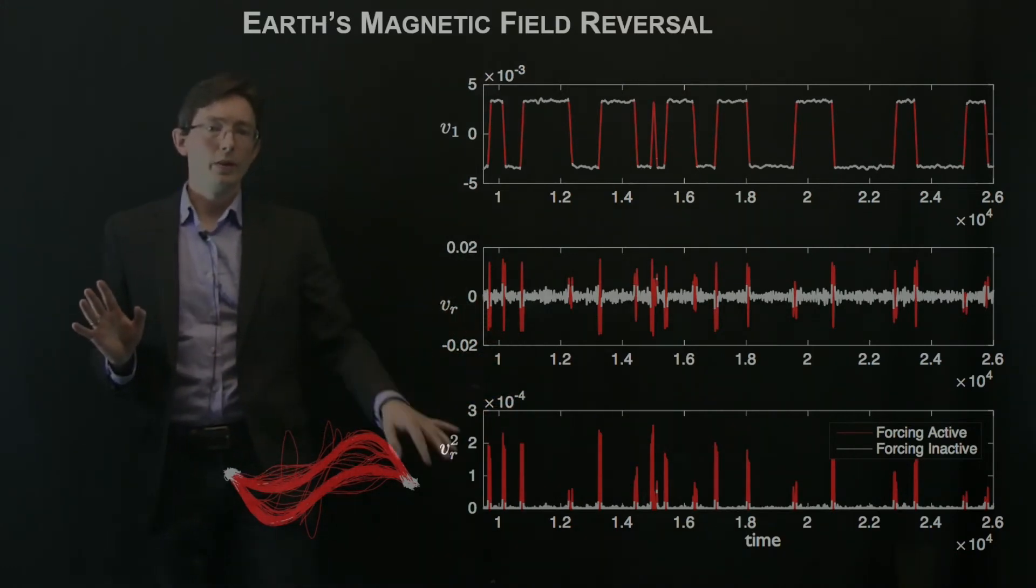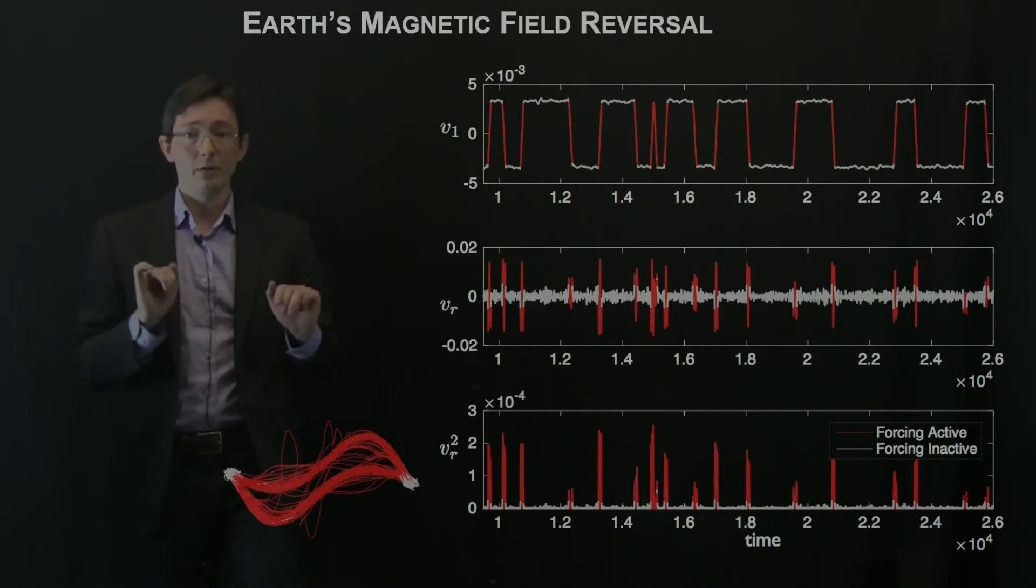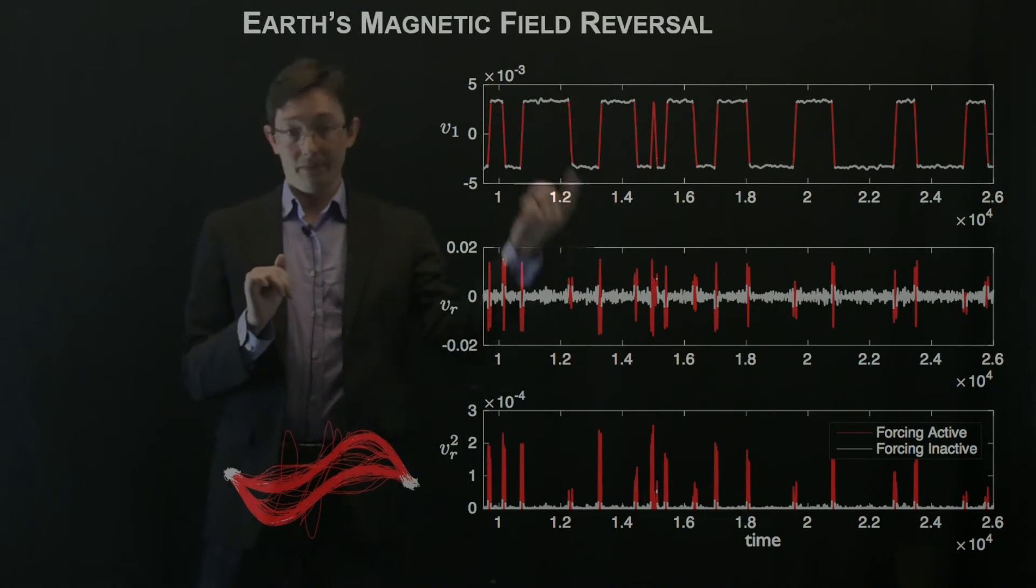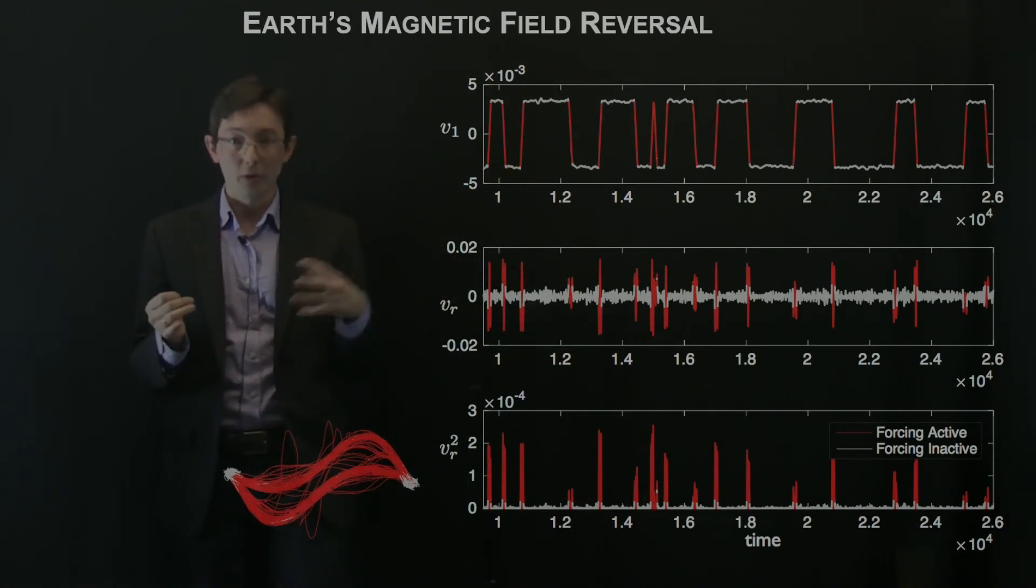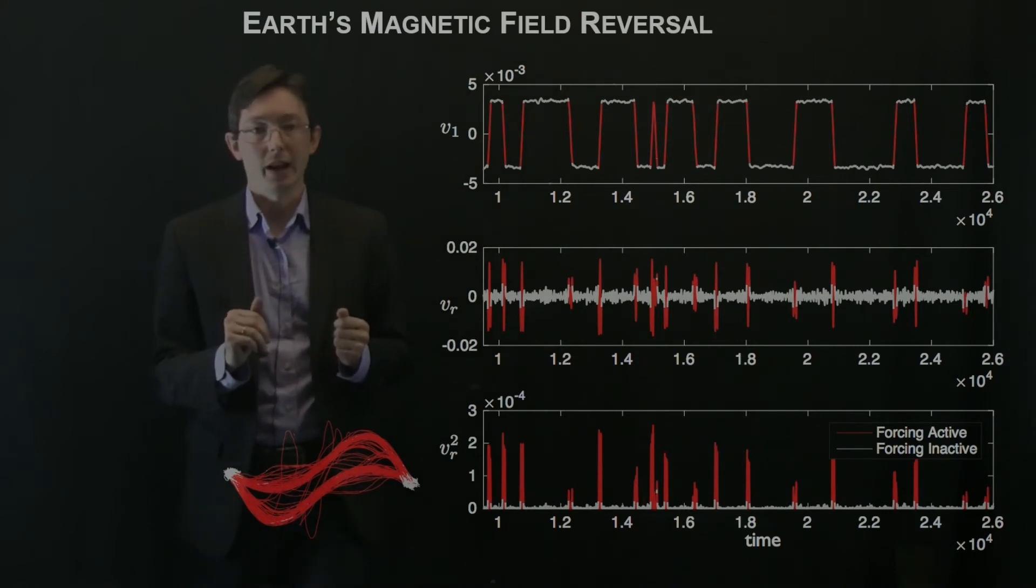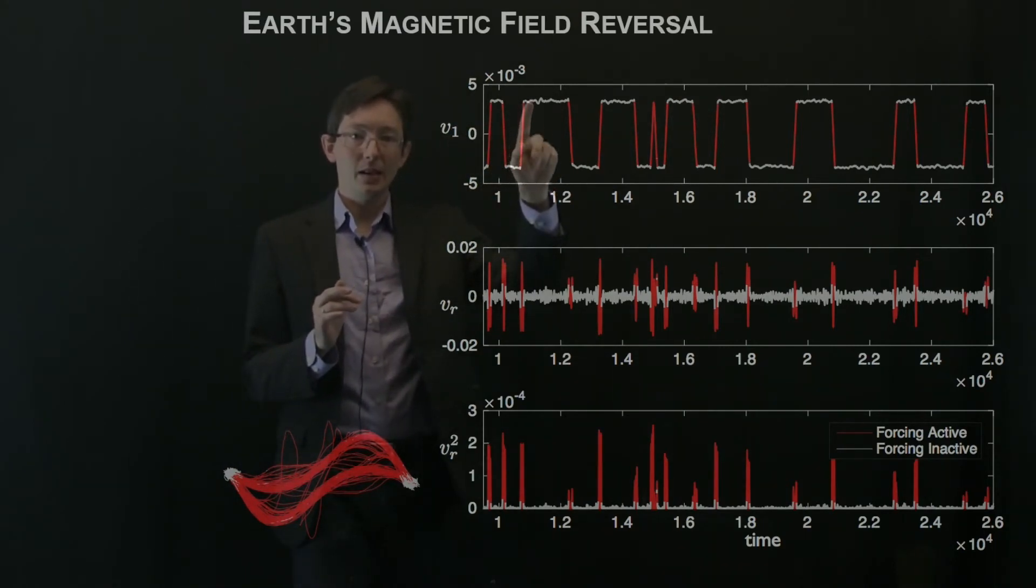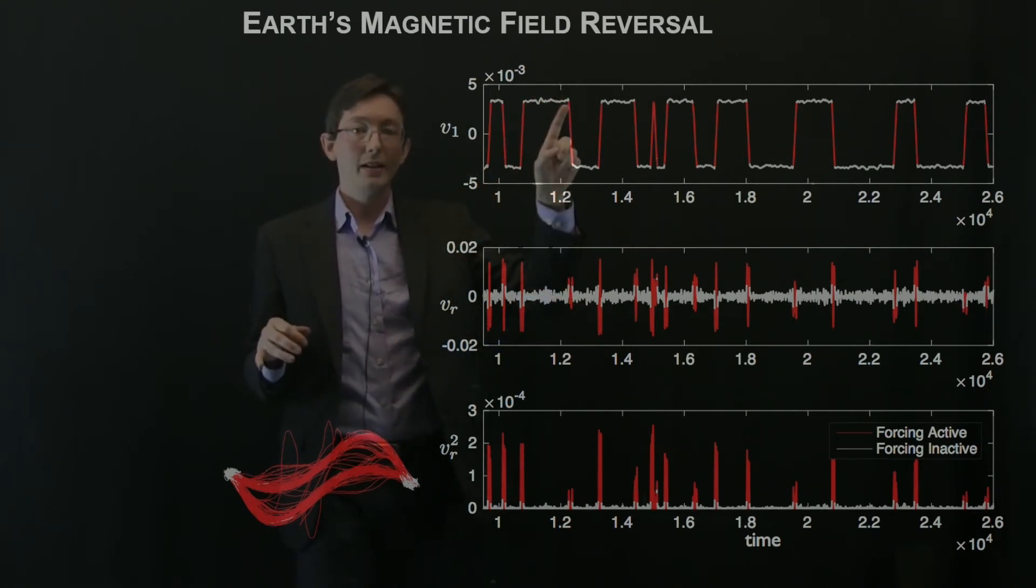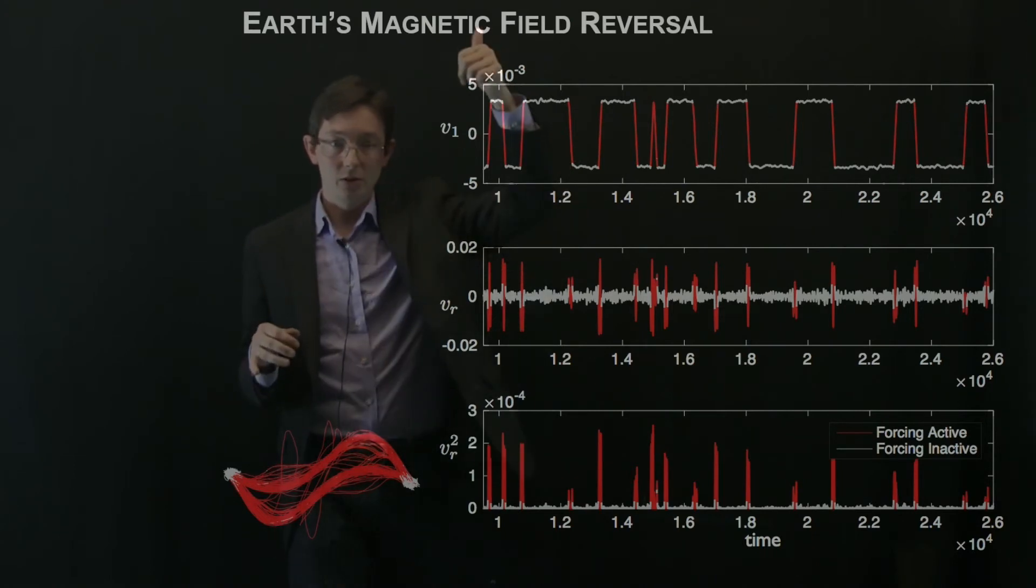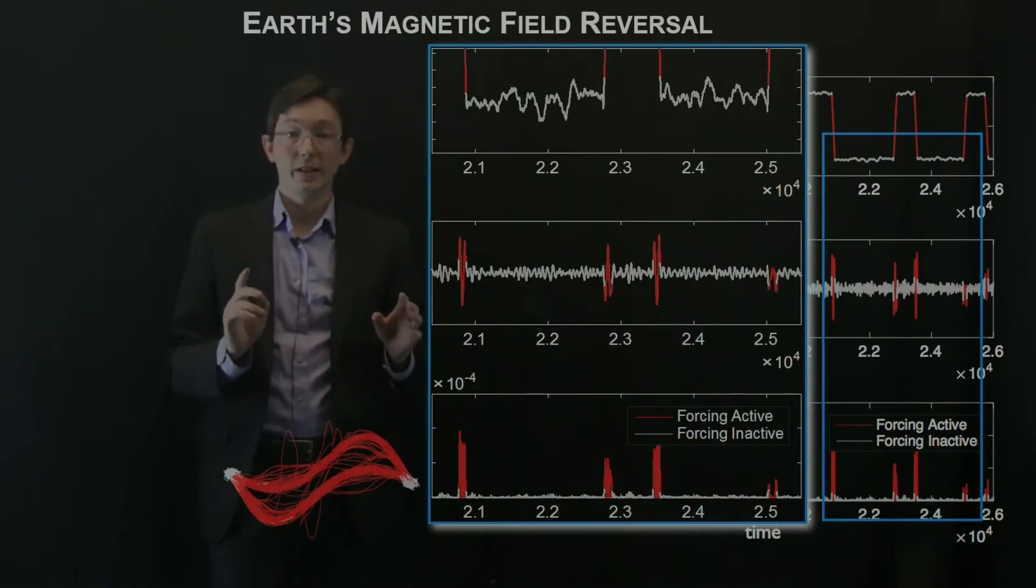And recall that when the forcing is not active, the system is really well described by this linear Koopman model. And when the forcing is active, some essential non-linearity is forcing the system and making something interesting happen. Now what's really fascinating here is that the system, whenever it's in this quiescent state, the forcing is inactive. And any time it's about to switch, the forcing jumps up. And so if we zoom in, we want to know if this is actually predictive or not.